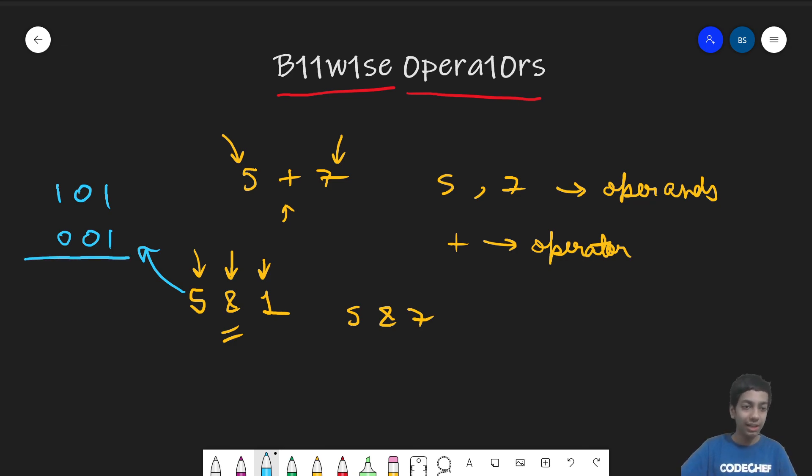So 5 is 101 and 1 we know is 001. So it will then take the bitwise AND of these two numbers in binary form. So it will do whatever it has to do. We will talk about this operator in greater detail down the course. And then it will return something in binary.